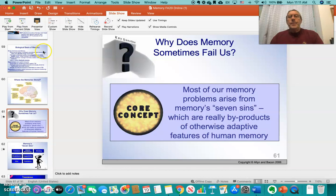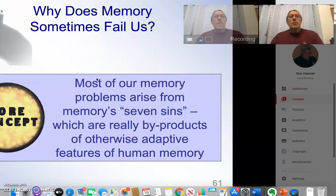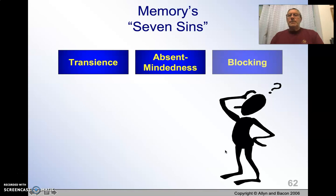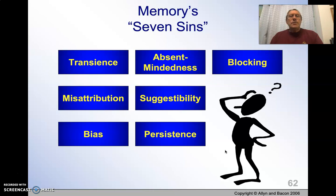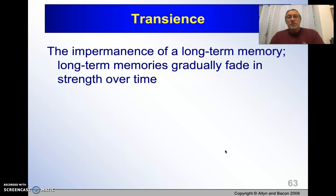There are seven different categories — seven sins. We're going to take a look at each one of these sequentially. So, transience: transience is just what happens — memories deteriorate over time.